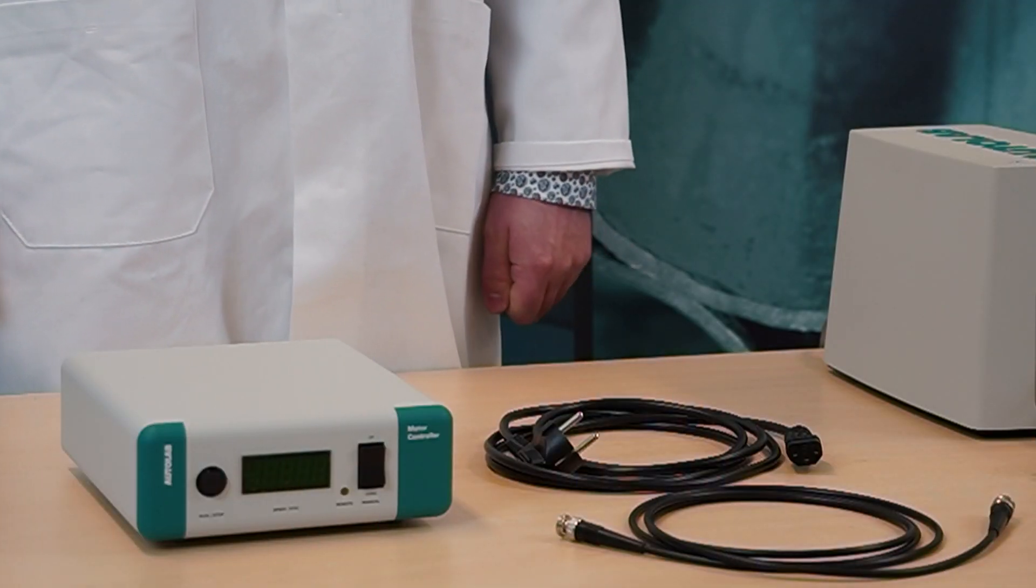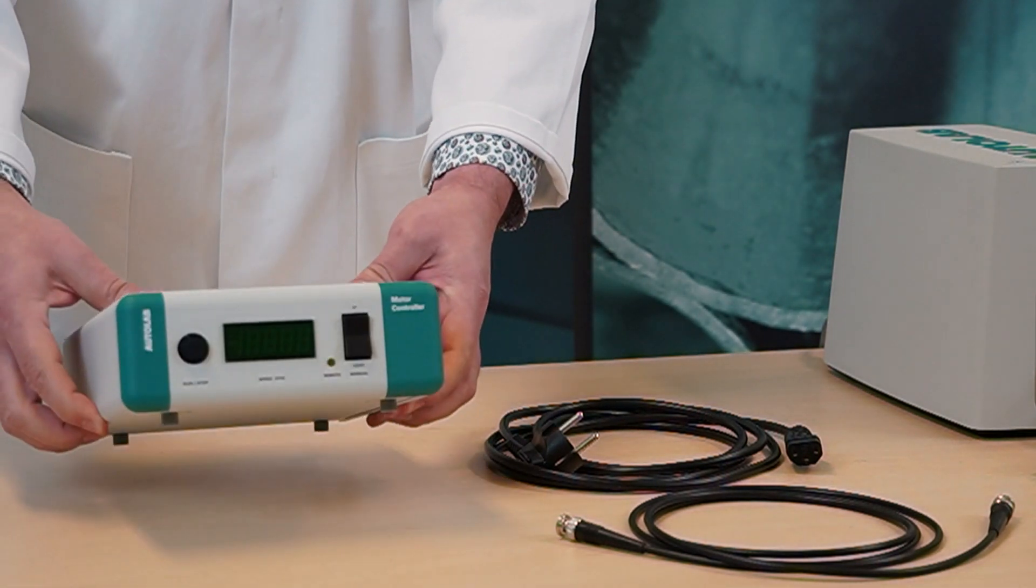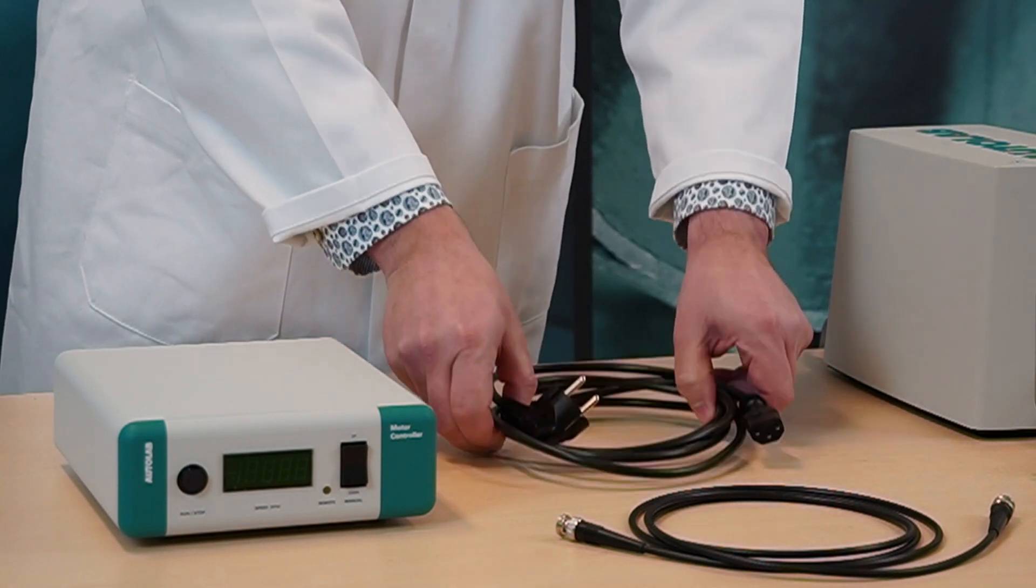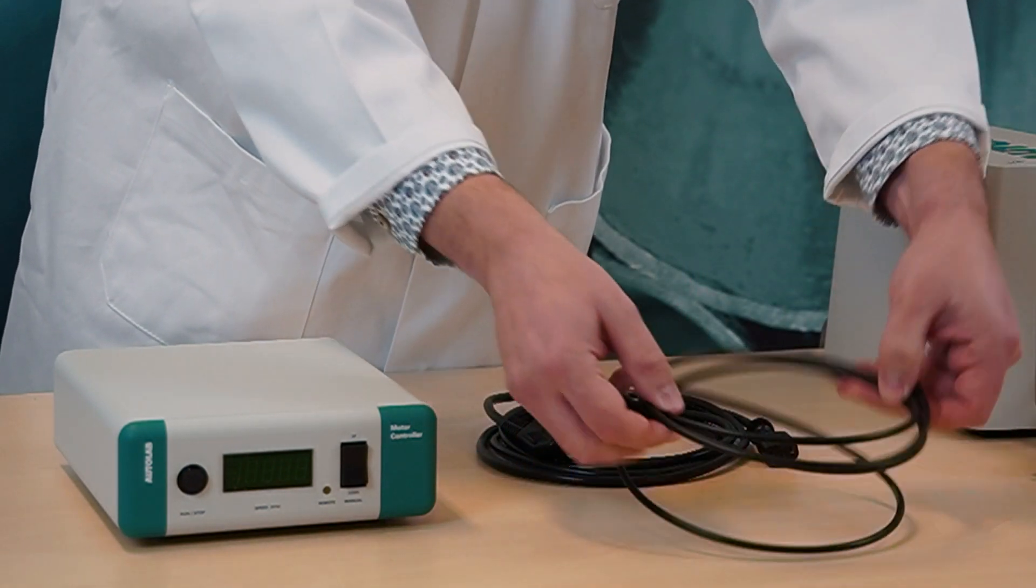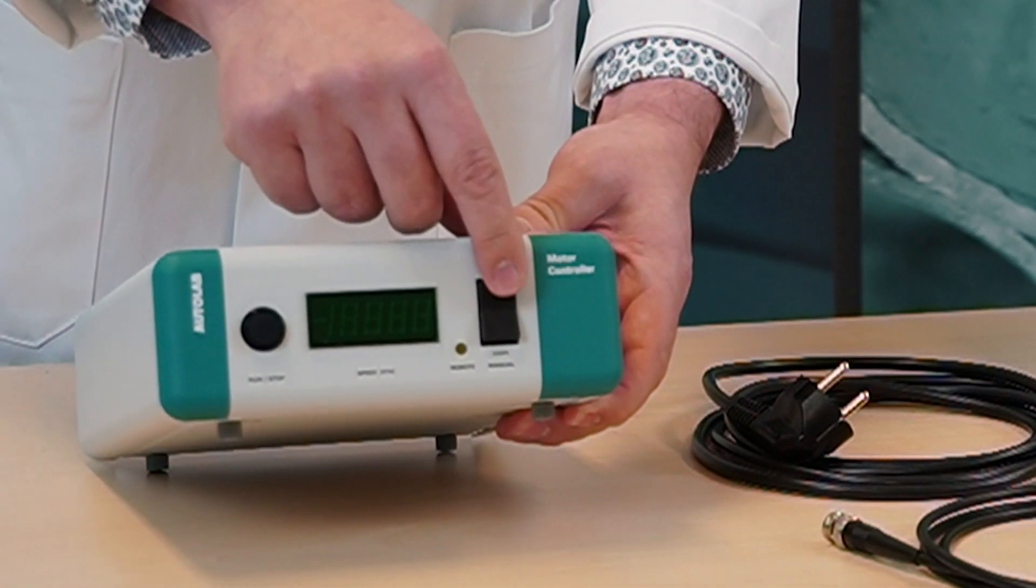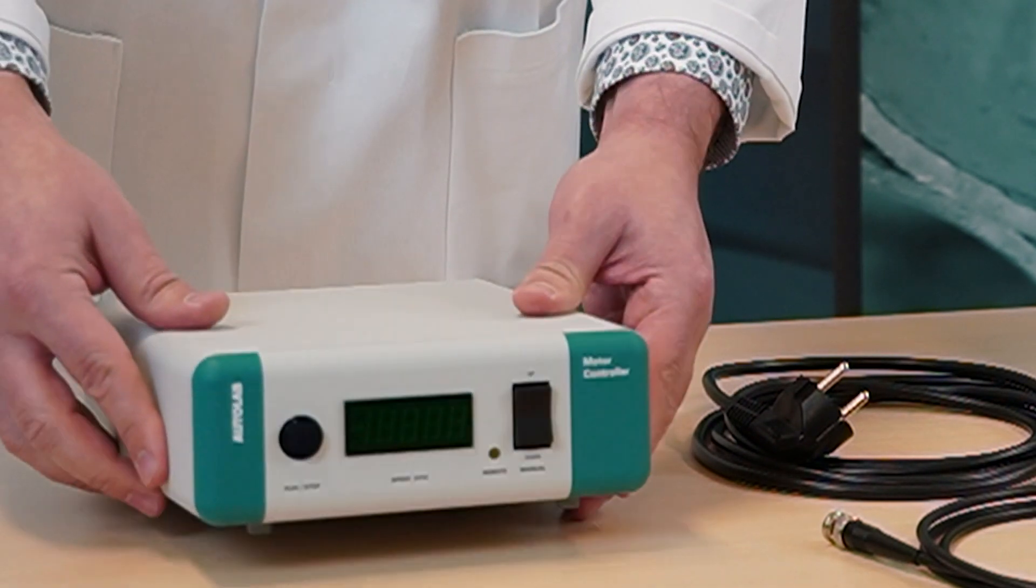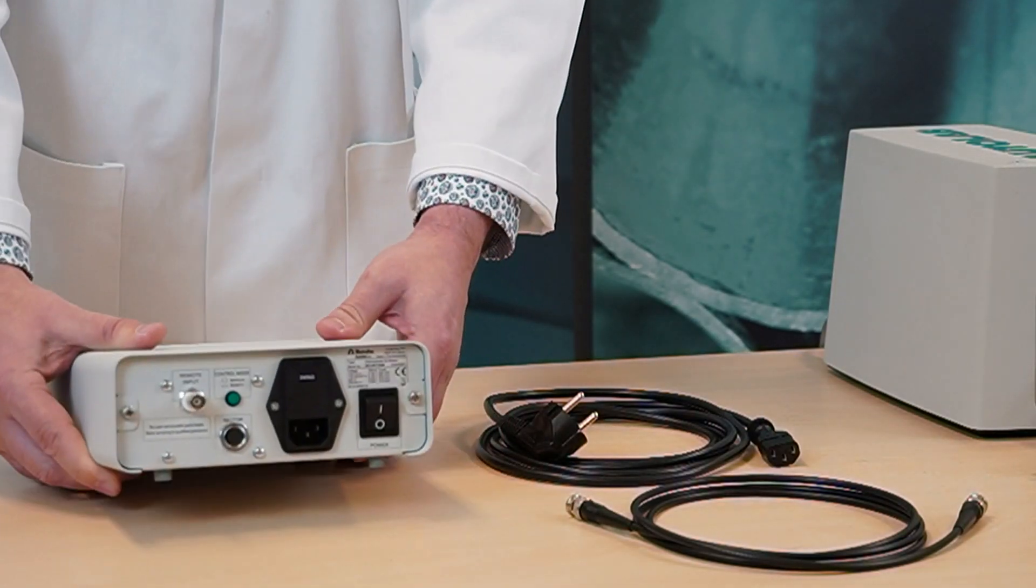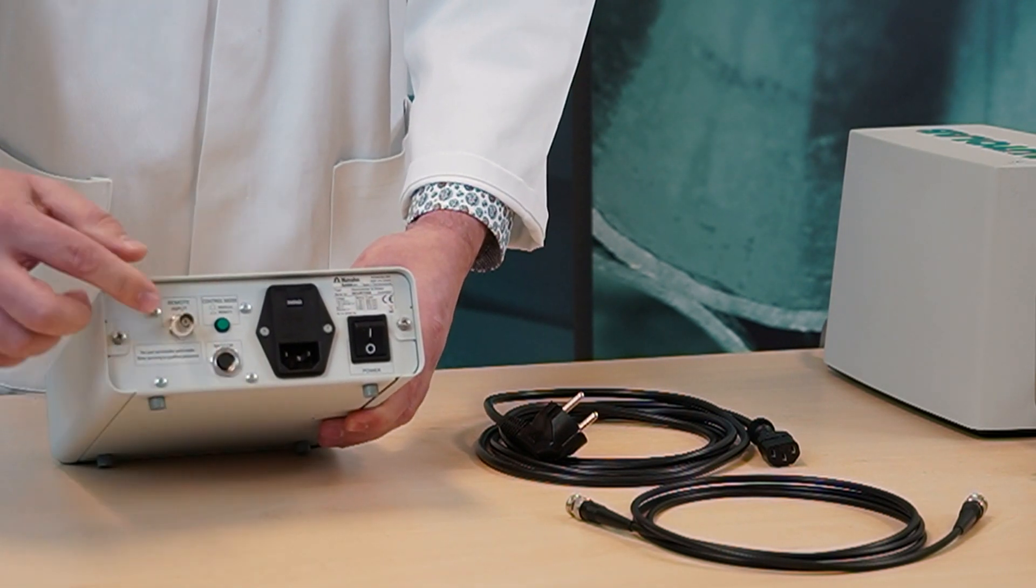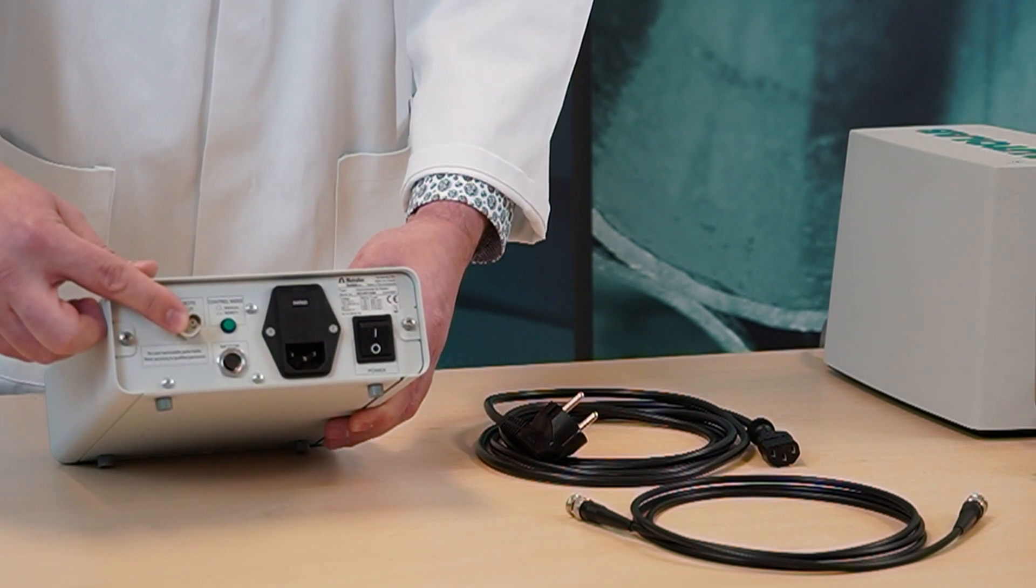In the second box you will find the motor controller unit and the power cable and the BNC cable to remotely control the rotator. On the front of the motor controller there is a manual control button for adjusting the rotation speed. On the back of the motor controller there are inputs for the rotator and also for the BNC cable to control remotely the rotation speed.